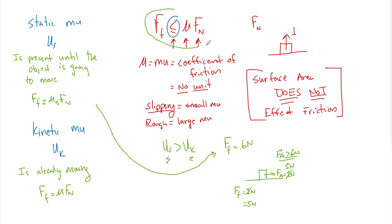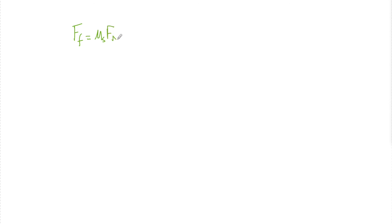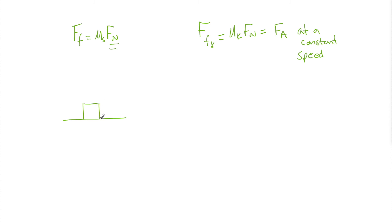As a recap: I find the maximum static friction — the force needed to overcome friction — using mu_static times F_N. I find kinetic friction using mu_kinetic times F_N, or it equals the applied force at constant speed. If you're new to the force of the normal, there is no formula for it — you must solve for it. But on a flat horizontal surface where the object isn't moving up or down, F_N is generally equal to mg. So the force of friction becomes mu times mg, because F_gravity equals mg and Newton's second law sets them equal.